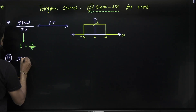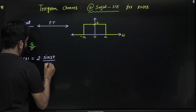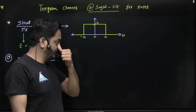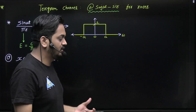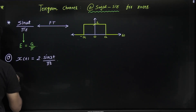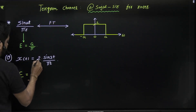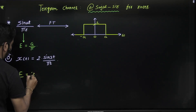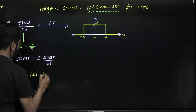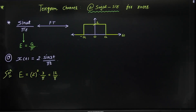Suppose x(t) = 2·sine(3t) / (πt), and someone is asking to find the energy of this signal. In the time domain it is very difficult, so you can use this shortcut. There is amplitude scaling here — amplitude is 2, so energy is proportional to 2² = 4. Here a equals 3, so energy = 4 × (3/π) = 12/π.